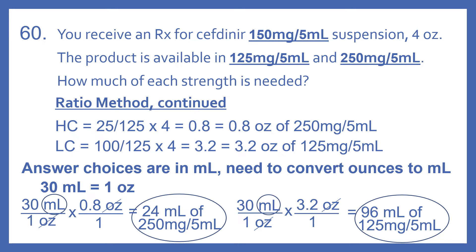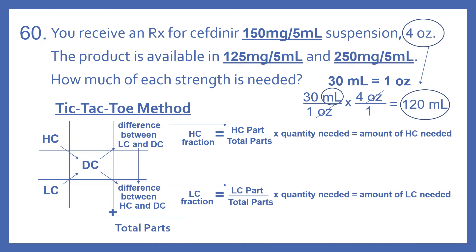To convert the other one: 30 milliliters per one ounce times 3.2 ounces gives us 96 milliliters of the 125 mg per 5 ml. Now we'll look at the tic-tac-toe method. Before we do, we'll convert 4 ounces into milliliters since our answers are in milliliters. There are 30 milliliters in one ounce, so 30 times 4 is 120 milliliters — that is our quantity needed.